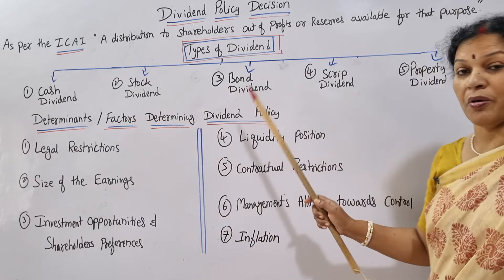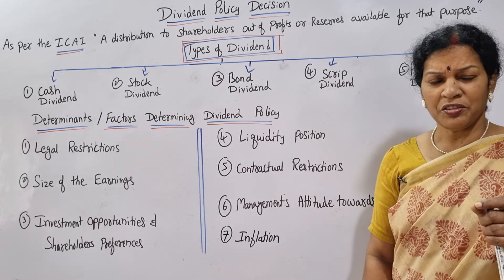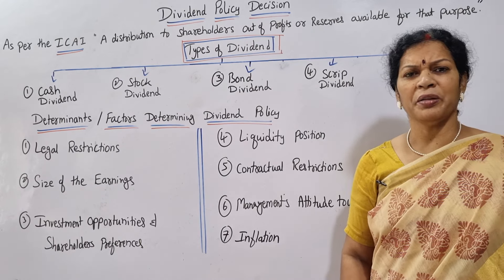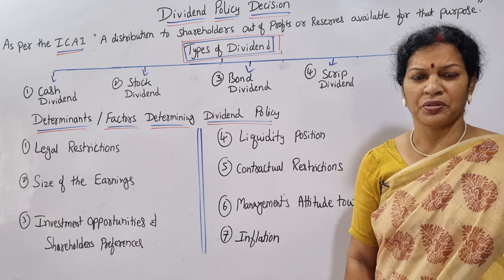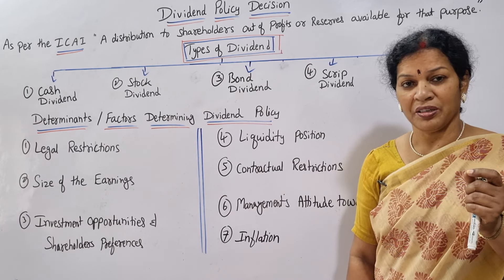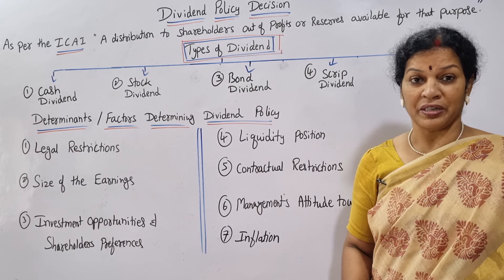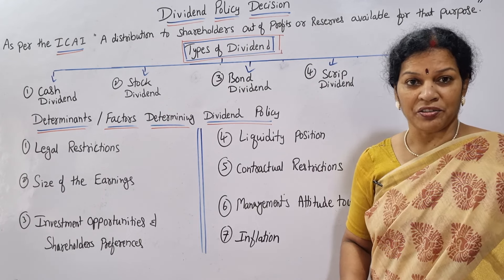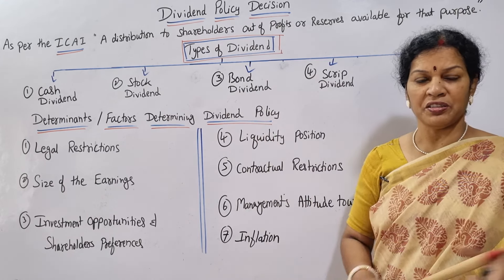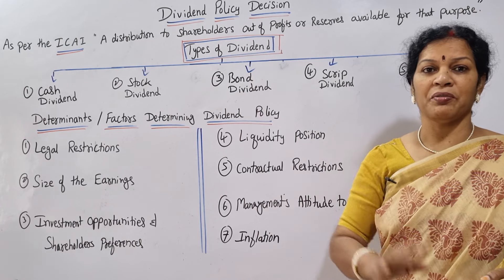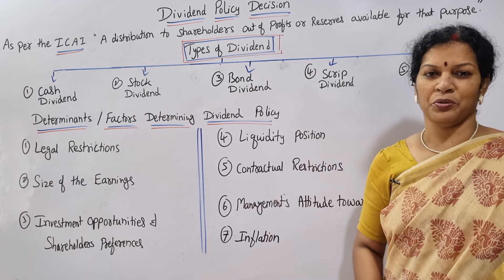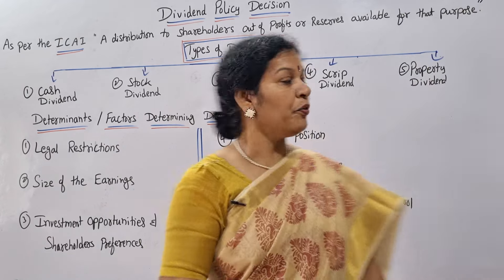The third type is bond dividend. In place of a dividend, the company may give a bond, which can be encashed in the future. This is used when the company's liquidity position is not good and they don't have cash to pay the dividend right now. The bond is given to the shareholders, and they can encash it or retain it — anytime they can use it.